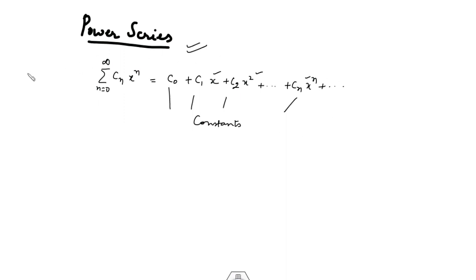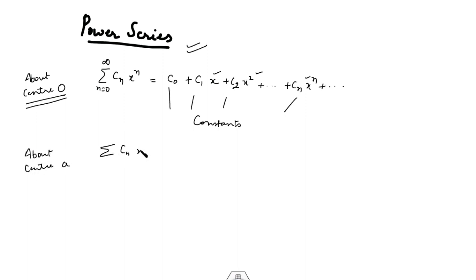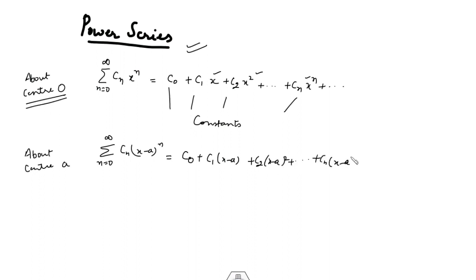This first form is a power series about the center 0. A power series about the center a is given by the sum of c_n times (x minus a)^n, which expands as c_0 plus c_1(x minus a) plus c_2(x minus a) squared and so on. Here c_0, c_1, c_2, through c_n are constants, and it is a power series in terms of powers of (x minus a), so this is a power series about the center a.